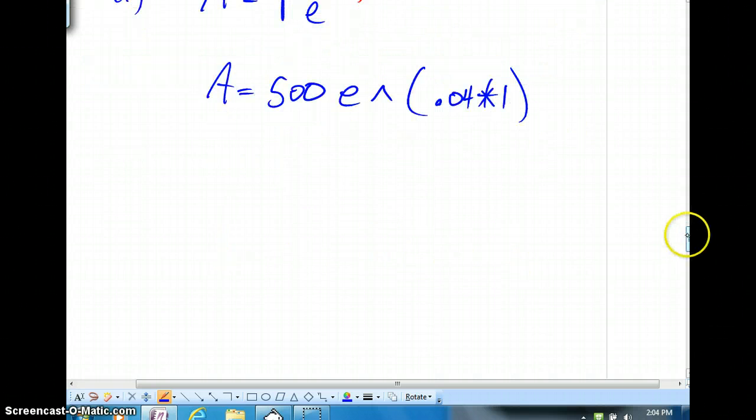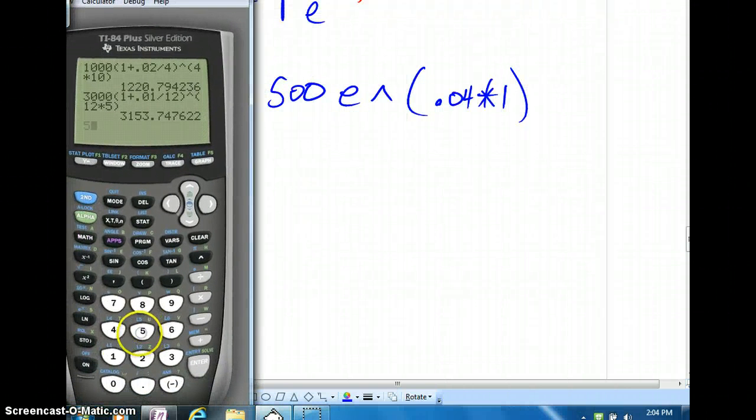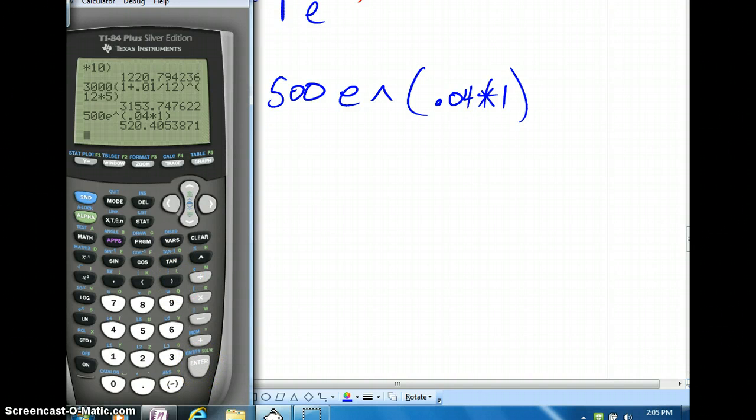Of course, we know any decimal times 1 is just going to be that decimal itself. You might wonder how we're going to type this out. 500. You might wonder where E is. Well, look at the 4 button. Go 1 to the left. You'll see an LN button. And right above LN, real faintly in blue, is E to the X. I'm going to hit 2nd, and then hit that button. 2nd, LN, will bring up E to a power. And very nicely, it's already written with the parentheses in there. Of course, you don't have to say times 1. I think we all know what that is. But very quickly, you can see that it's $520.41.